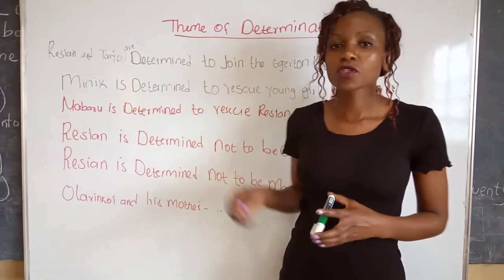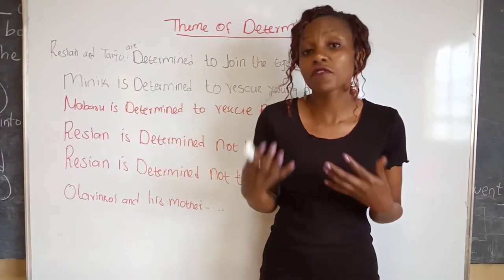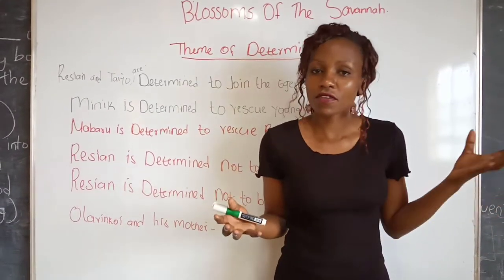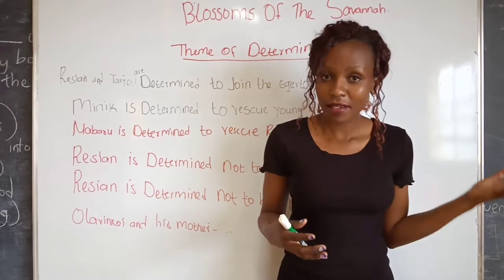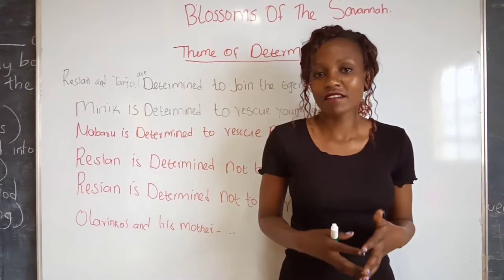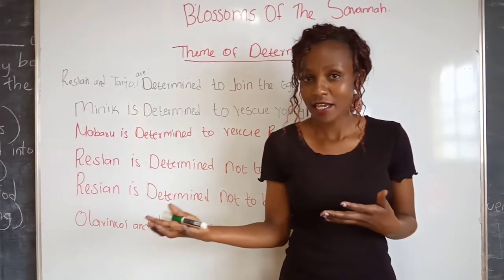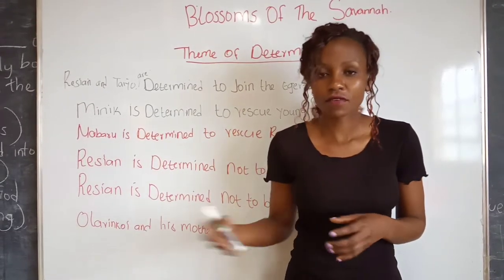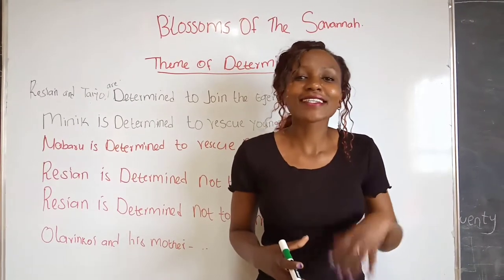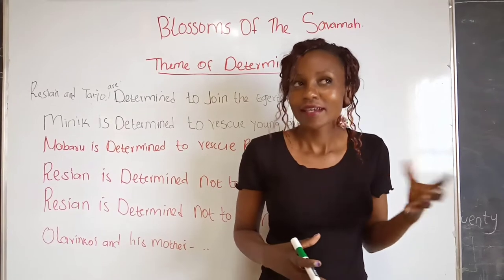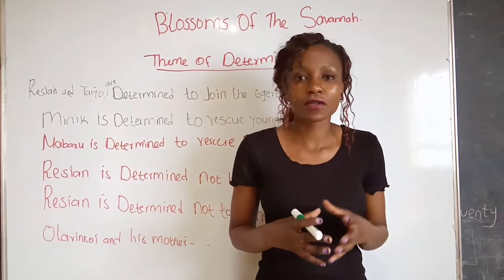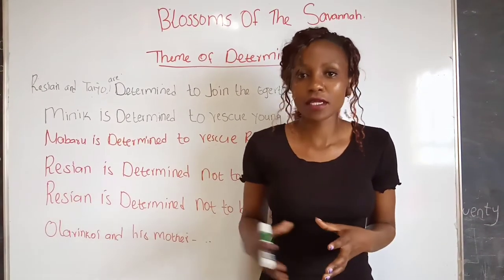Number two, Minik ole Ingwitoy is determined to rescue young girls from female genital mutilation and early marriages. The people of Nasila valued their tradition, which is why they hated Minik and called her names — for example, she was referred to as a whore and a devil incarnate. But that does not stop her from fighting for the rights of girls. During the homecoming ceremony, Ole Musanga cast Minik aside and said she should go down with the setting sun, showing the intensity of the conflict.